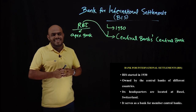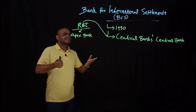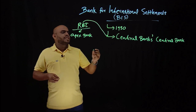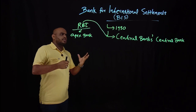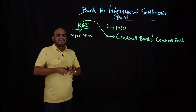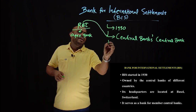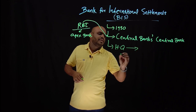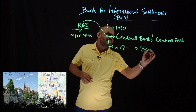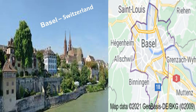The right thing is that BIS is known as the central bank's central bank. Many countries from Europe and also including India founded the Bank for International Settlements in 1930. The headquarter of BIS is located at Basel, which is in Switzerland.